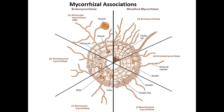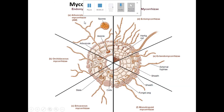Let's see some pictorial depictions of mycorrhizae. As discussed in the last section, it is a kind of mutualistic association and there are two different types: endomycorrhizae and ectomycorrhizae.